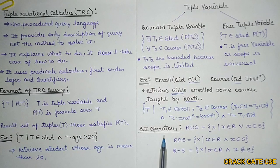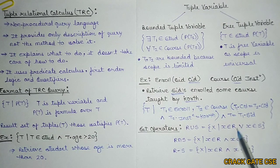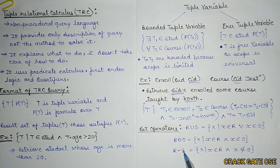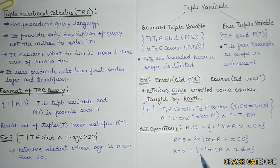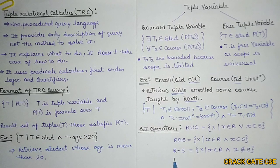Now let's understand some set operators and how they work in TRC. R union S equals the set of X such that X belongs to R OR X belongs to S. Similarly, for intersection, we have to take the common elements — meaning they have to belong to both tables. So it is X such that X belongs to R AND X belongs to S. In union we use OR, in intersection we use AND. And for R minus S, X belongs to R AND X does not belong to S — meaning only the unique records of R will be represented. That's how we use set operators in TRC.